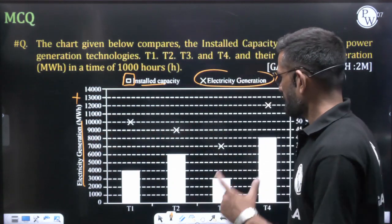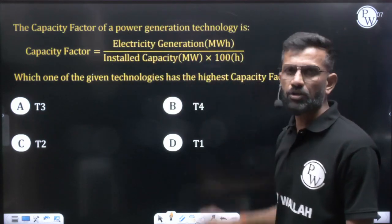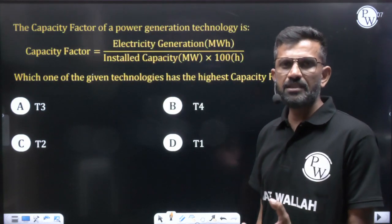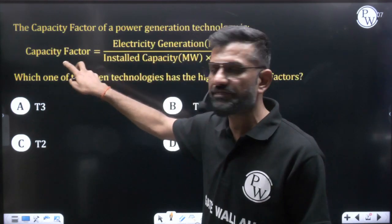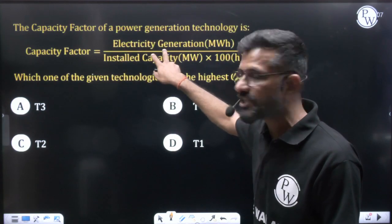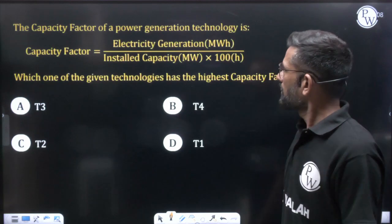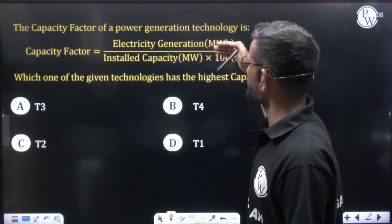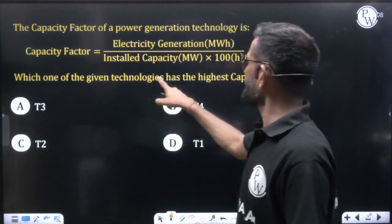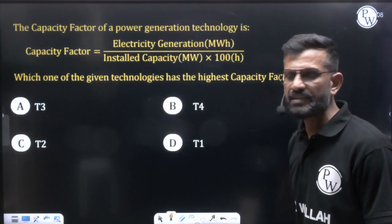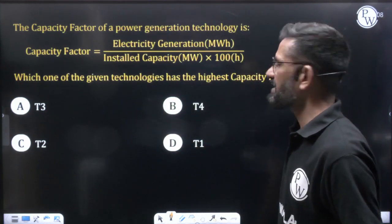Based on this, they are asking for the capacity factor of a power generation technology. The capacity factor formula is: capacity factor equals electricity generation divided by installed capacity, multiplied by 100. Using this formula, we need to find which one of the given technologies — T1 to T4 — has the highest capacity factor.